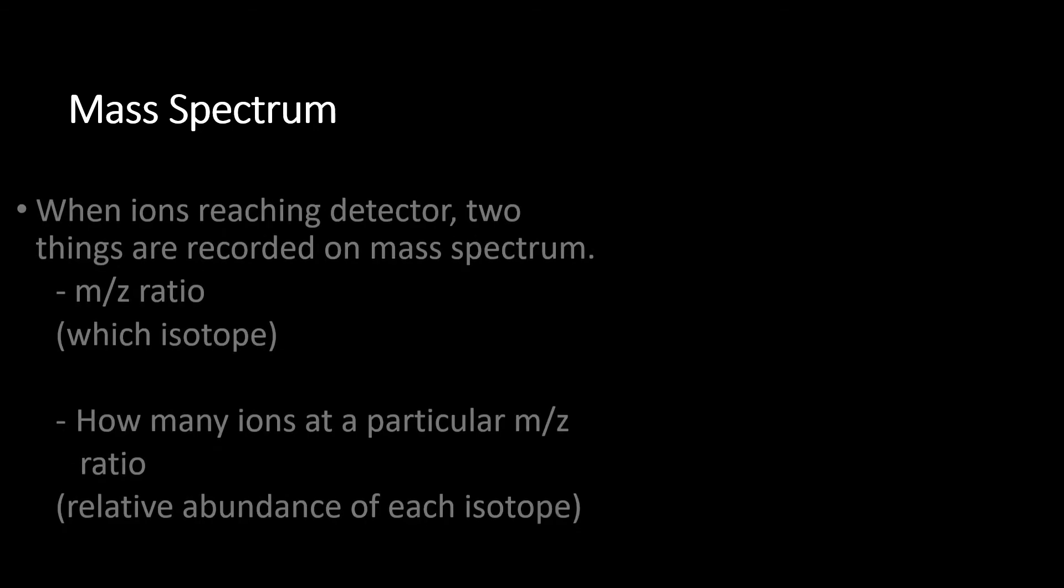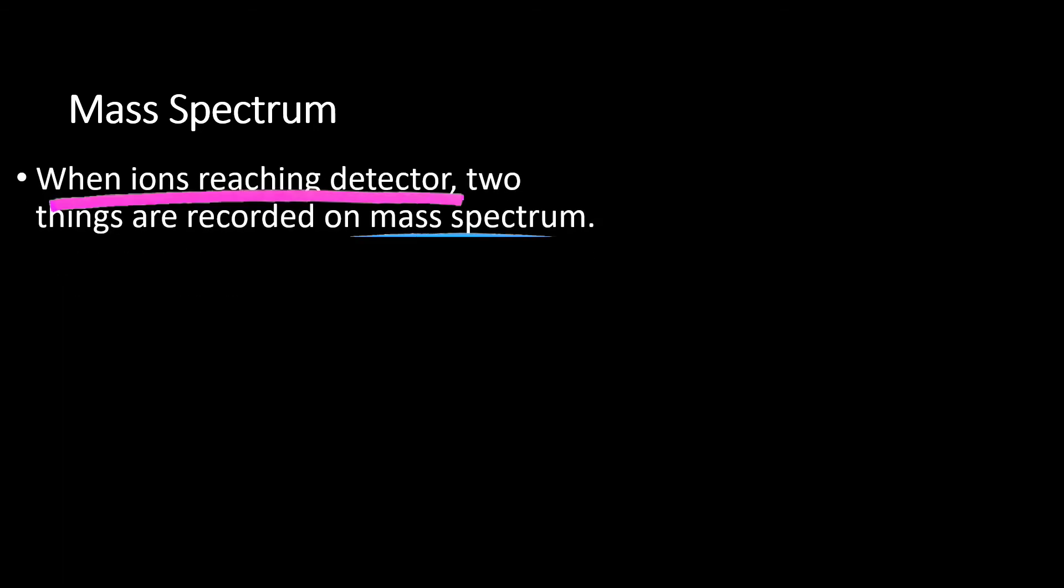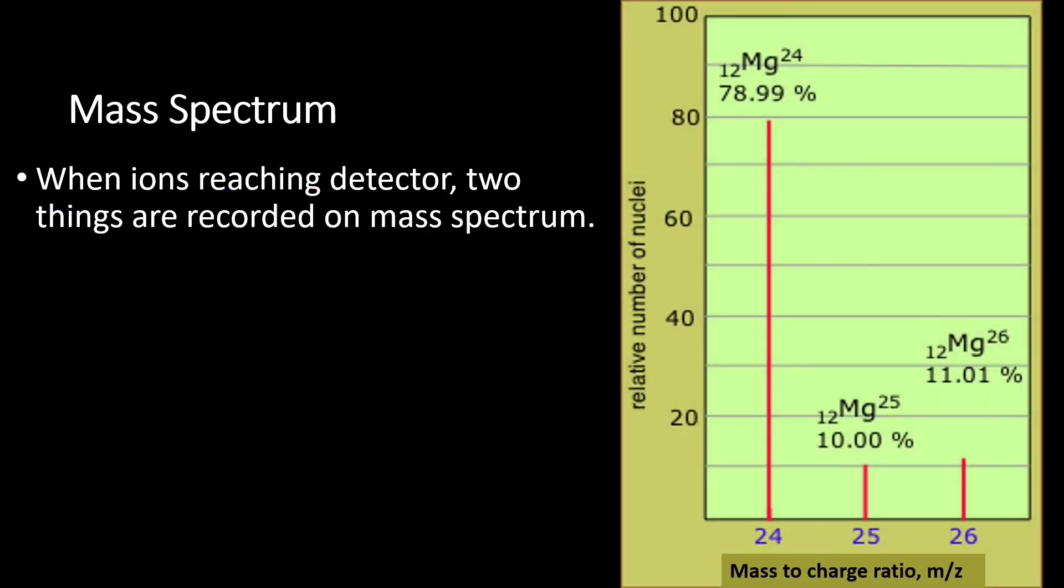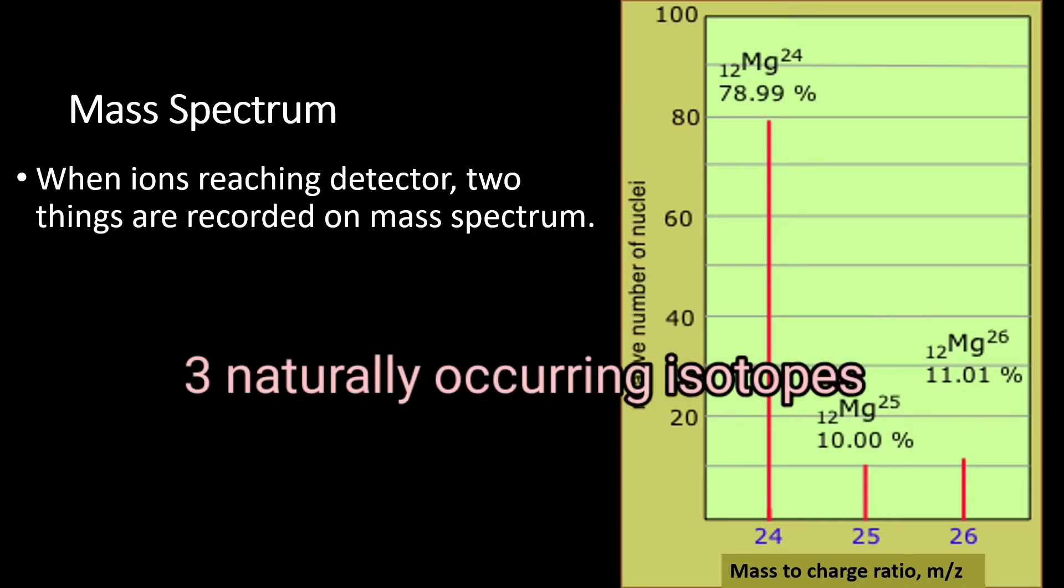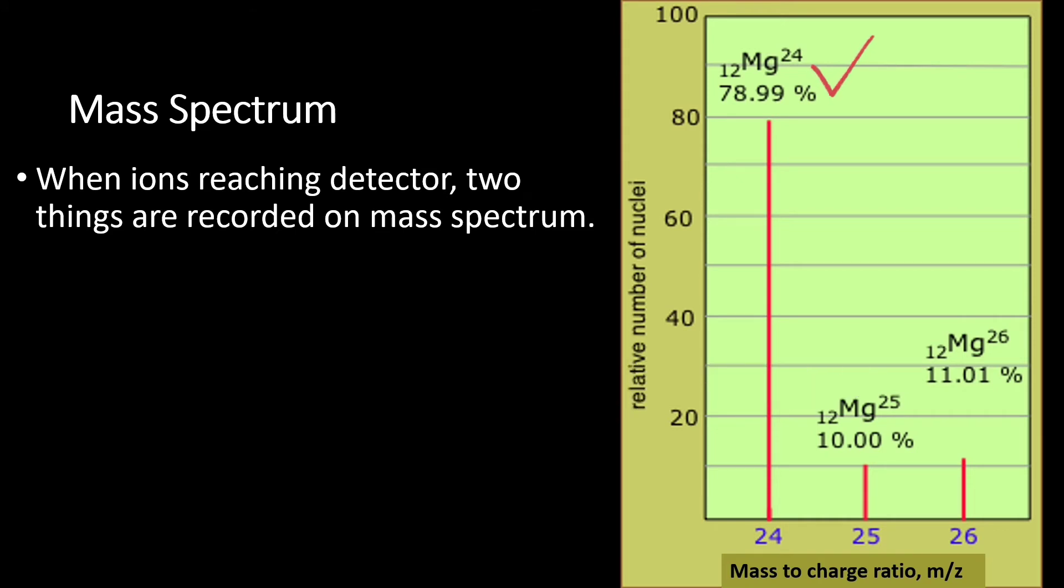After passing through the magnetic field, all the ions will reach the detector. The detector usually is connected to a computer and will produce a mass spectrum. So this is the example of mass spectrum that you can get. So our sample here is magnesium and in magnesium, there are three naturally occurring isotopes. Magnesium-24, magnesium-25, and magnesium-26.